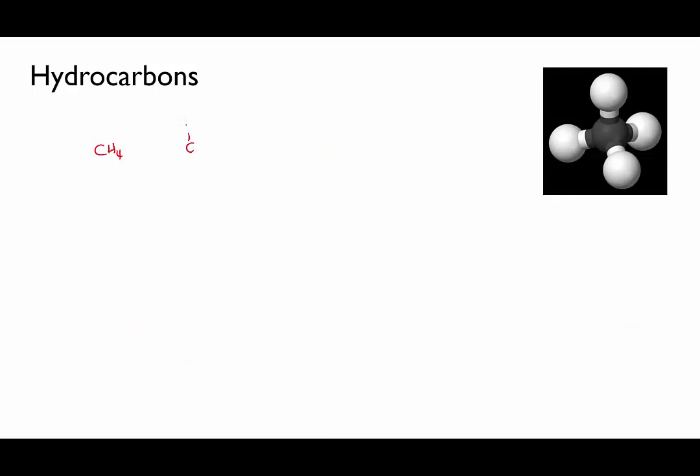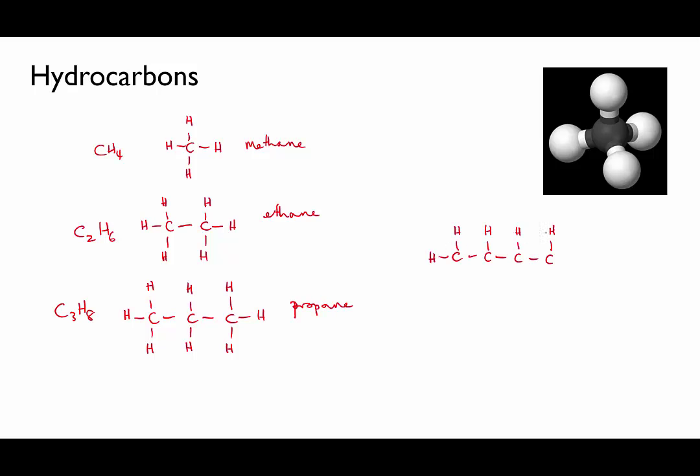So that's methane with one carbon. But it's possible to have two carbons joined together. Each carbon must form a total of four bonds, so we fill in the remaining bonds with hydrogen. So the formula for this compound, the next simplest hydrocarbon from methane, is C2H6, and its name is ethane. The next biggest has three carbons, it's called propane. The next has four carbons, it's called butane.